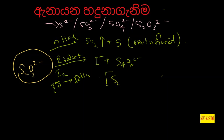We'll be right back. If we look at the point, we will give — so we'll get back. I2, I minus. And this point is S4O6 2 minus. Now we'll get back.